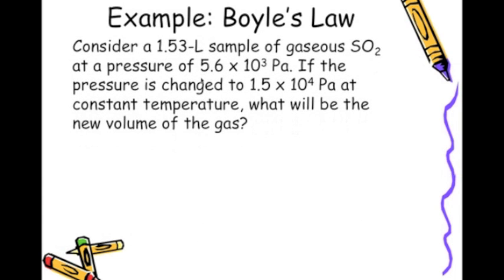Now, let's work an example of Boyle's Law. It said, consider a 1.53 liter sample of gaseous sulfur dioxide at a pressure of 5.6 times 10 to the third pascals. If the pressure has changed to 1.5 times 10 to the fourth pascals at a constant temperature, we see what will be the new volume of the gas. So here, first thing we're going to do is we're going to box our givens, what we are given in the problem. And we know that we are searching for our unknown of a new volume. And it's a constant temperature, so we know it's a Boyle's Law equation.